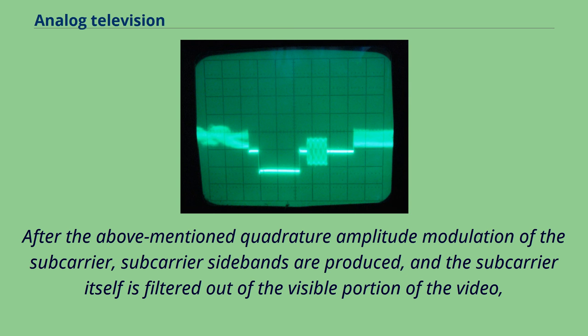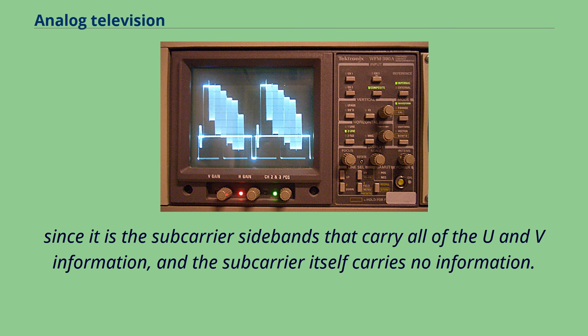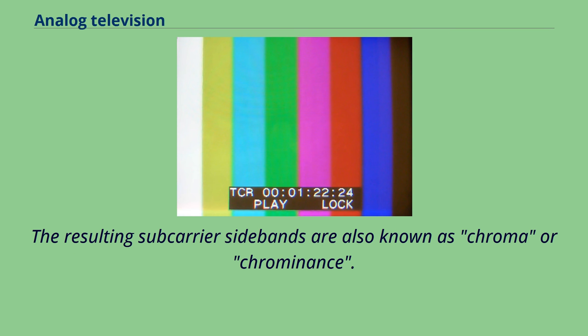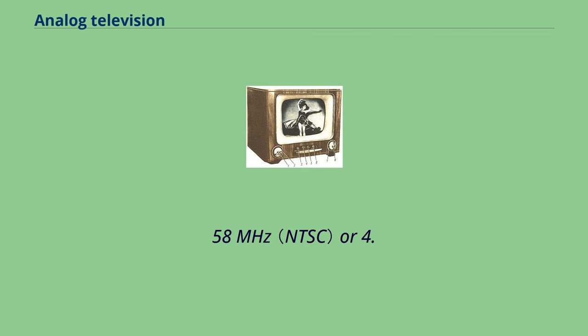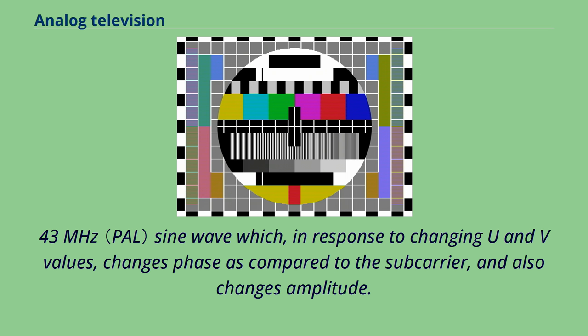Physically, this chrominance signal is a 3.58 MHz or 4.43 MHz sine wave which, in response to changing U and V values, changes phase as compared to the subcarrier, and also changes amplitude. As it turns out, the chroma amplitude represents the approximate saturation of a color, and the chroma phase against the subcarrier as reference approximately represents the hue of the color.